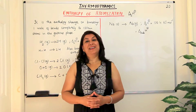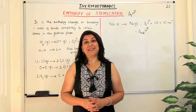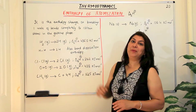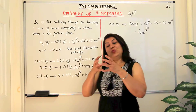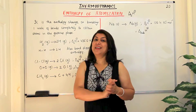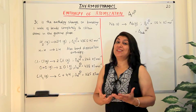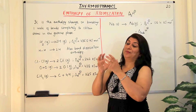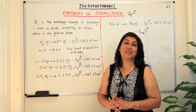Hello, I'm Seema and welcome to part 20 of the chapter thermodynamics. In this video I'm going to tell you about the enthalpy of atomization. When you have one mole of a molecule and you break that molecule to give you atoms of that substance, that process is known as atomization, and the enthalpy change involved in the breaking of one mole of the bonds of one mole of a substance is known as the enthalpy of atomization.